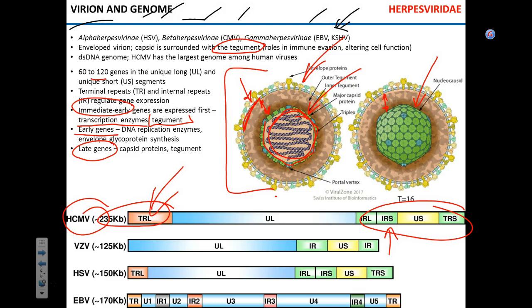This staged expression makes perfect sense if you think from the virus's perspective: the cell is not happy about infection and tries to shut it down, so the first thing the virus does is block cellular immune responses with immediate early genes. Then it replicates its DNA using early gene products. Finally, when the cell is shut down and DNA is replicated, the virus makes its capsid using late genes.